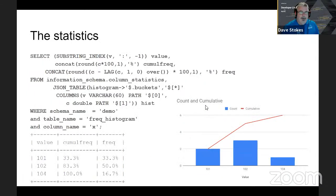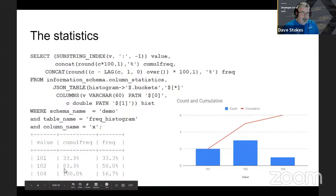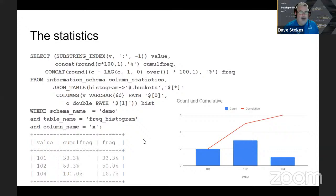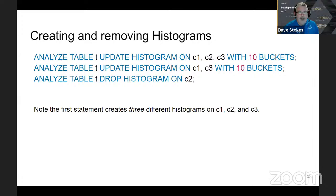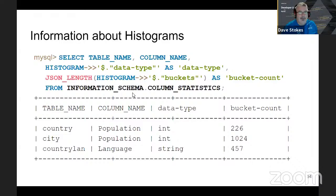The cumulative frequency: 101 is 33% of our data, 102 cumulative is 83% even though it's only 50% of the data. This gives the optimizer a better chance of finding your data quickly and efficiently. Easy to create and remove histograms — first example: ANALYZE TABLE, UPDATE HISTOGRAM ON columns c1, c2, and c3 each with 10 buckets. You can also come back and redo the histogram on c1 and c2, and decide you don't need a histogram on c2 anymore. Histogram information is in the information_schema — table name, population, data type, bucket count.